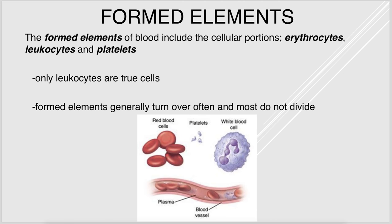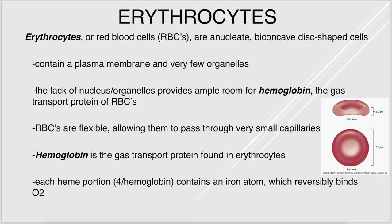The formed elements — the cellular component of blood — include red blood cells or erythrocytes, white blood cells which are leukocytes, and platelets. Red blood cells or erythrocytes are anucleate; they don't have a nucleus and they really don't even have any organelles. They're just bags of hemoglobin, which is the protein that transports oxygen — mostly oxygen, but also some carbon dioxide.